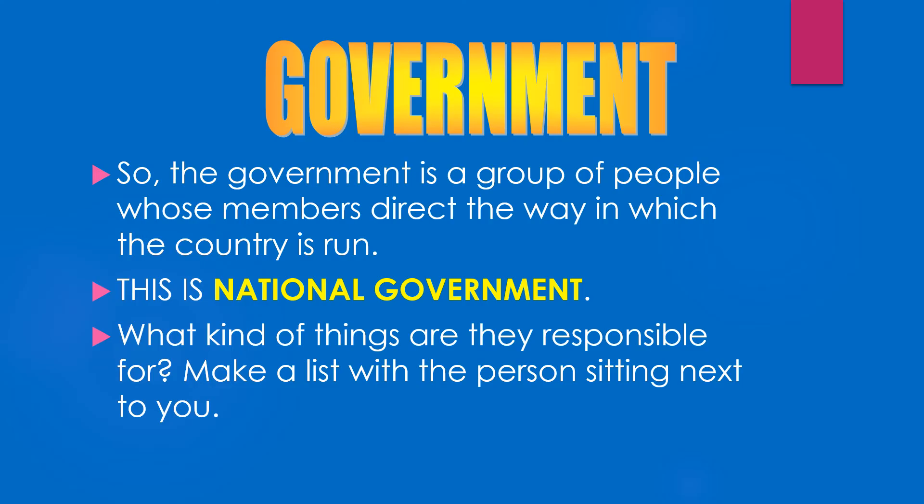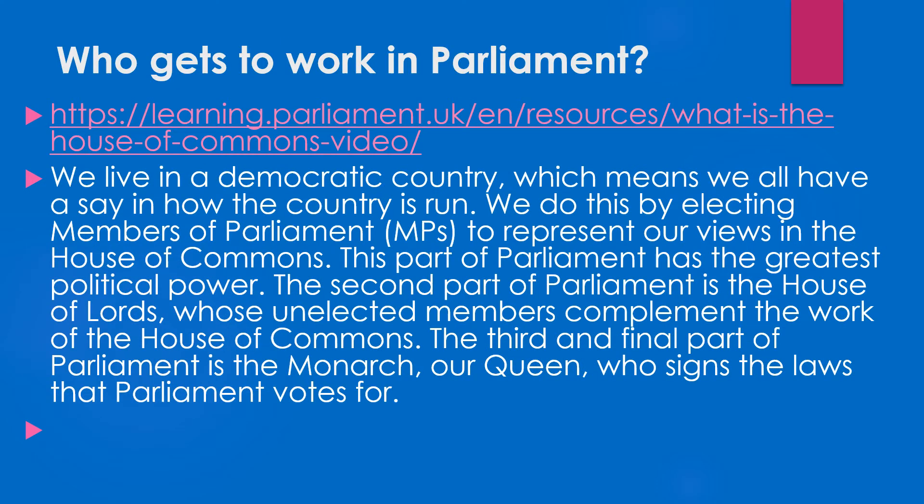So, government is a group of people who direct the way in which the country is run. Parliament — we live in a democratic country, so we've all got a say in how the country's run. We elect our MPs who represent our views — they're the ones with the greatest power. Then we've got the House of Lords, and then we've got the Queen.